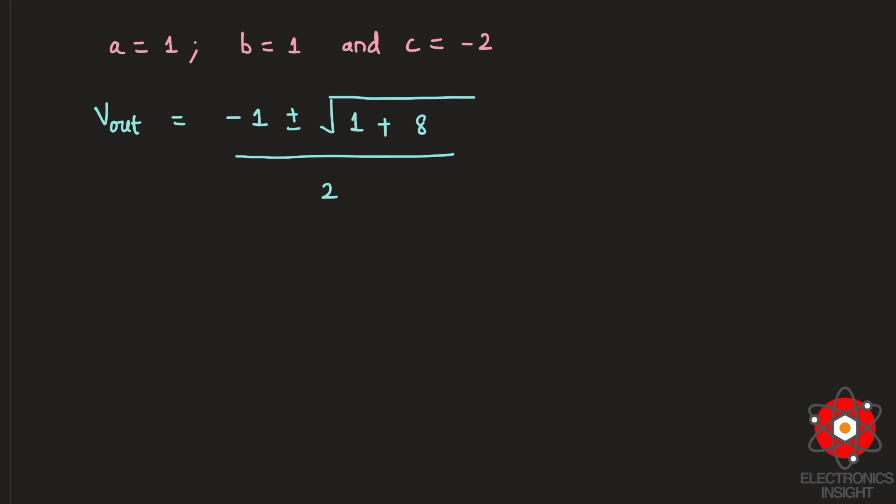So this is going to be 2. Therefore, if we try to simplify this we will be having (-1 ± 3) / 2. So this is going to give us two solutions. One is (-1 + 3) / 2 which is equal to 1.